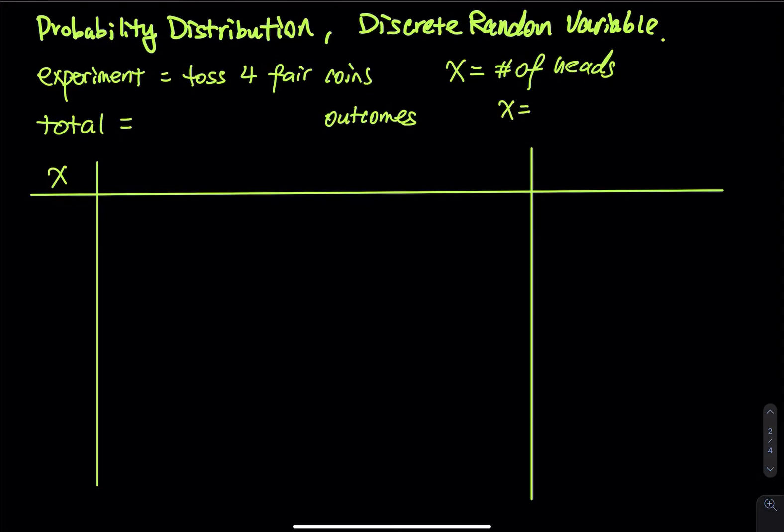So how many options do we have? We have zero head, one head, two heads, three heads, the maximum is four heads. So since this is a random variable, that means each X has its own probability. So let's put the X down to the table. Before we do that, how many outcomes do we expect to see in total in the sample space?